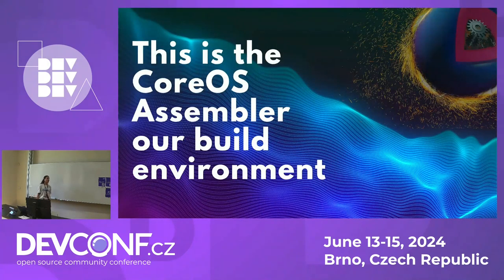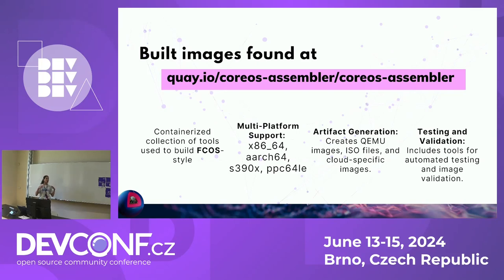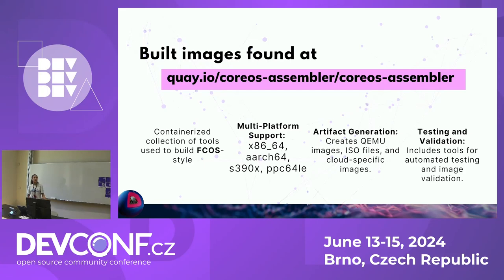How do we build CoreOS? We have the CoreOS Assembler — COSA — which is our main tool. It provides every single necessary step and tool to create our builds. It's essentially a containerized image stored in the CoreOS Assembler repository. You need this image to accomplish the build process because it has everything needed inside. It's multi-platform — manifested in the registry — so if you're on x86 or Power, you just run podman pull to get the right platform image. It's also responsible for creating our artifacts: QEMU, live images, metal, and all cloud-specific ones, as well as running tests, validation, releases, and the push process.